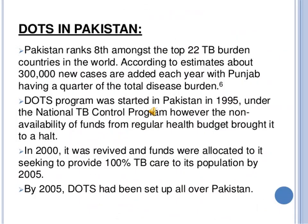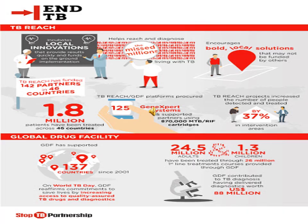Doctors use directly observed treatment short-course chemotherapy (DOTS) in Pakistan. Pakistan is among the top countries with a high TB burden, with about 300,000 new patients added each year, with Punjab having one quarter of the total TB burden. Pakistan started DOTS in 1995 under a TB control program, but lack of funds caused it to fall in 2000. It was revised and funded again, aiming to provide 100% TB care by 2005, by which time DOTS had been set up all over Pakistan.